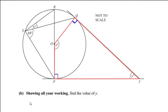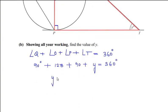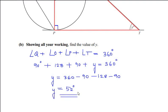Since QOPT is a quadrilateral, the sum of all its angles is 360 degrees. So angle Q + angle O + angle P + angle T = 360 degrees. Angle Q = 90°, angle O = x = 128°, angle P = 90°, and angle T = y. Therefore y = 360 − 90 − 128 − 90 = 52 degrees.